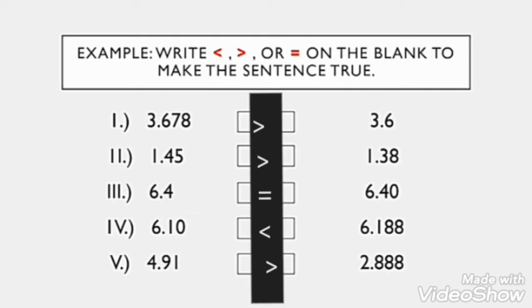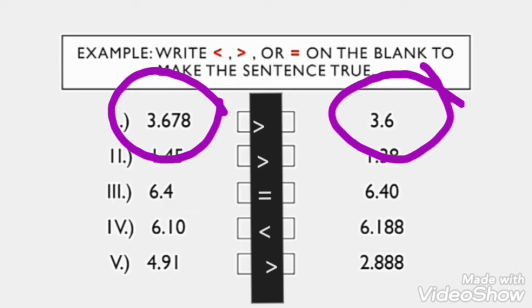For number 1, 3.678 is greater than 3.6. 3.678 has 4 digits while 3.6 has 2 digits. If we are going to add zeros to the second number, it will become 3.600. We write greater than because 7 is greater than 0. So, that is why 3.678 is greater than 3.600.